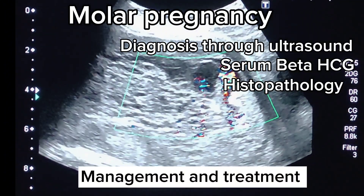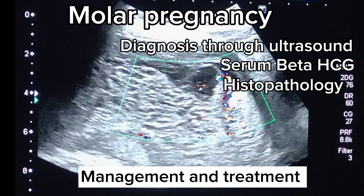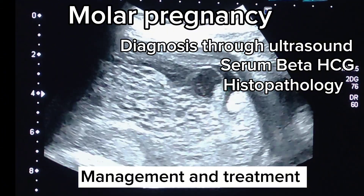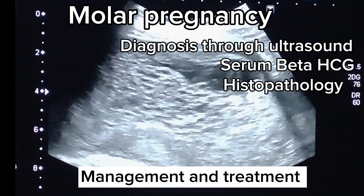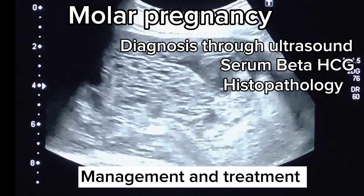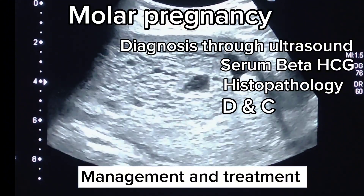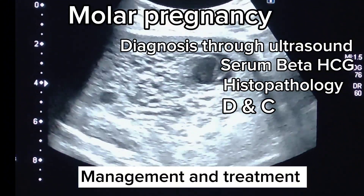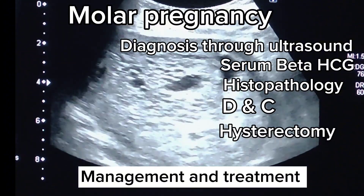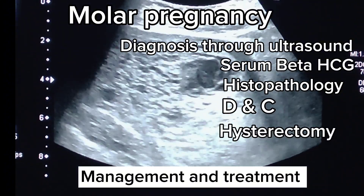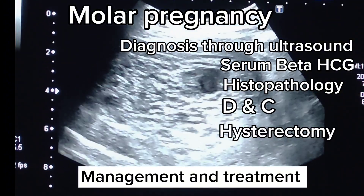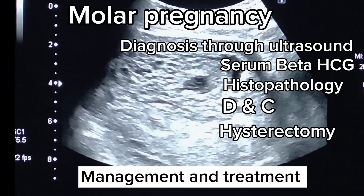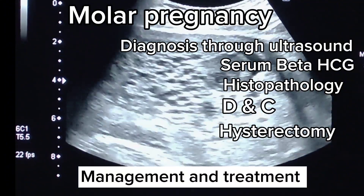The first-line treatment to remove molar tissue is dilatation and curettage (D&C), which is performed through suction and evacuation. Hysterectomy is considered in older women or those with no further reproductive desires.